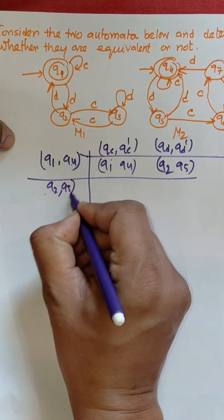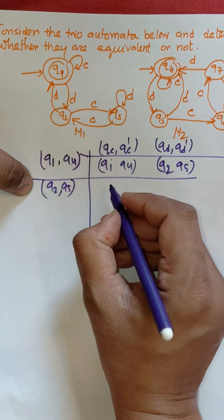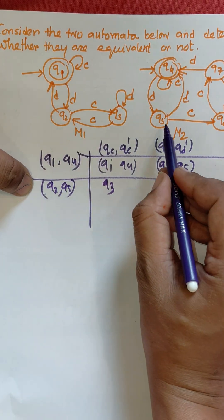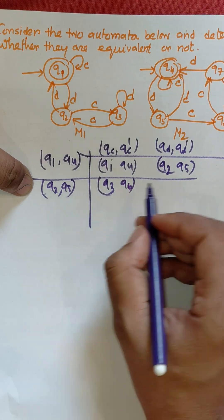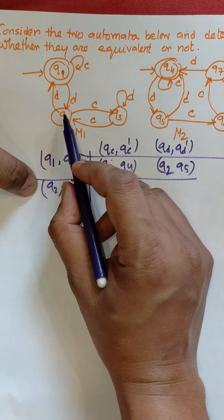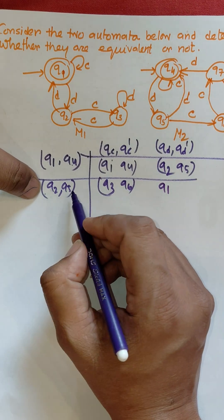For q2 to c, output is q3. For q5 to c, output is q6, both are non-final, so no problem. For q2 to d, output is q1, this is final. q5 to d, output is q4, both are final, so no problem.